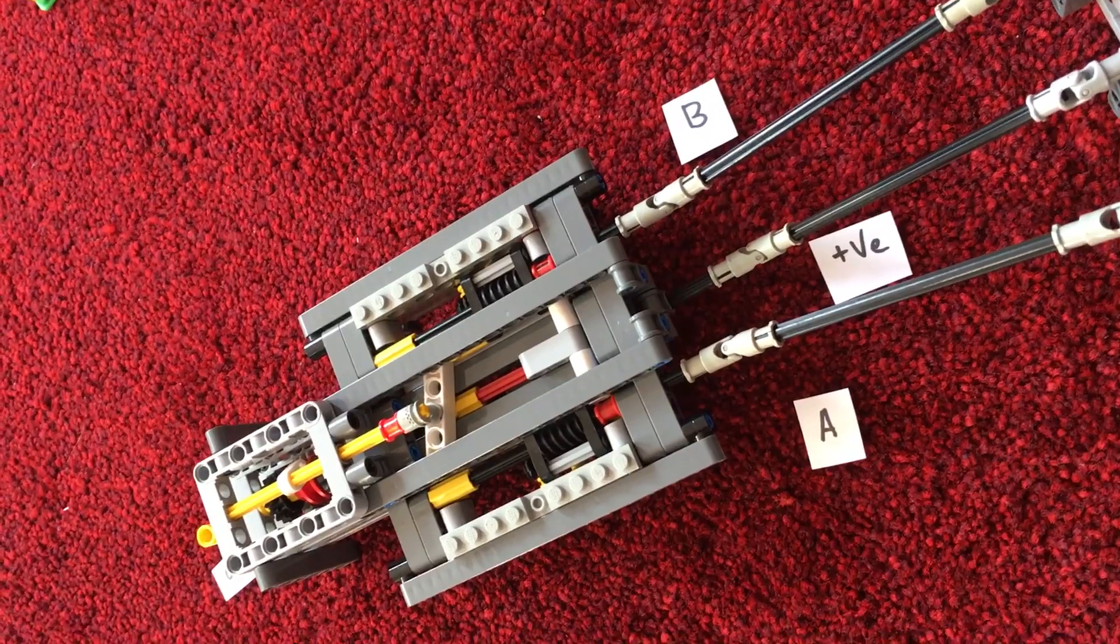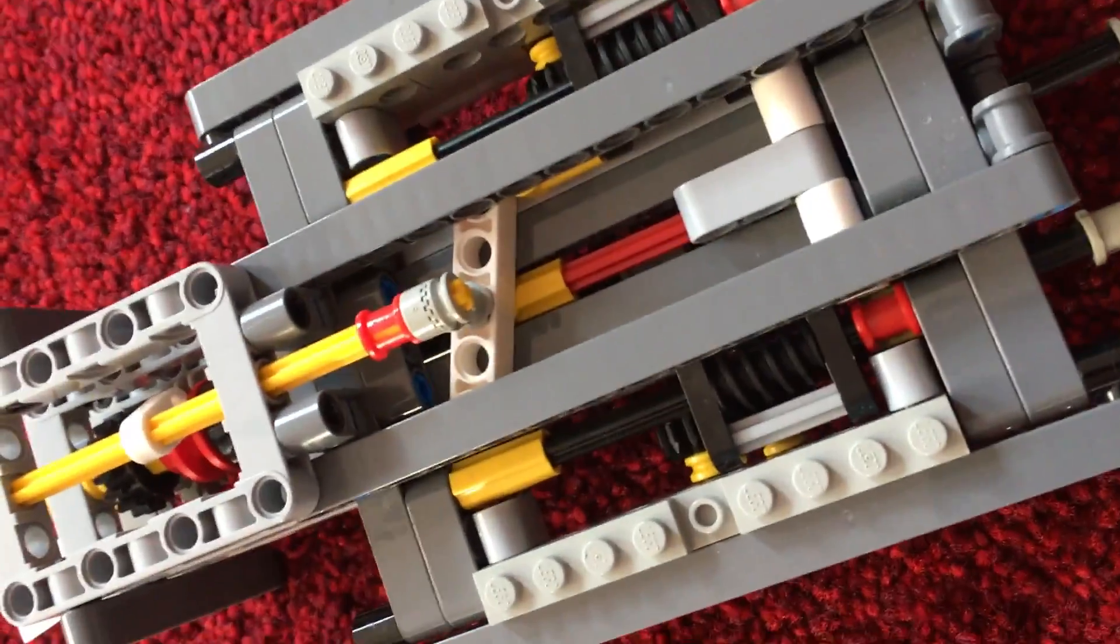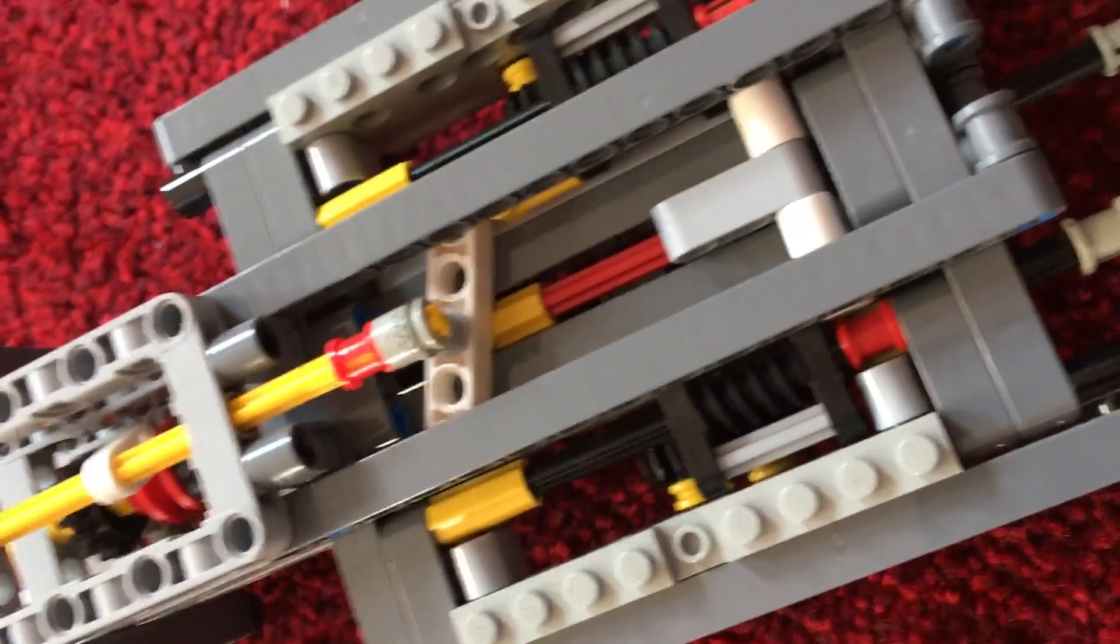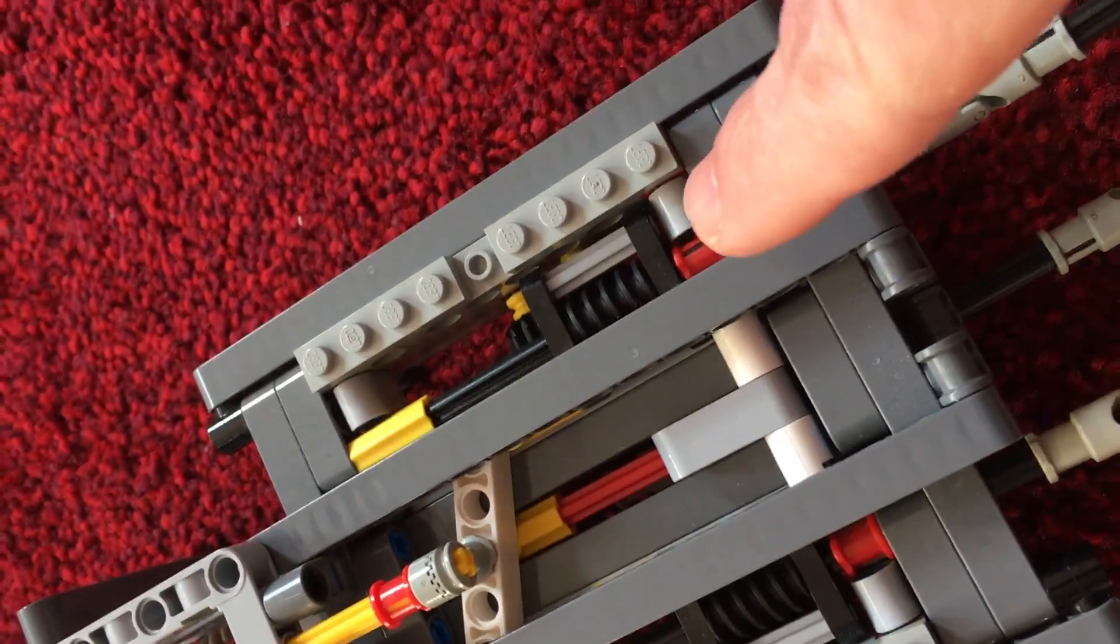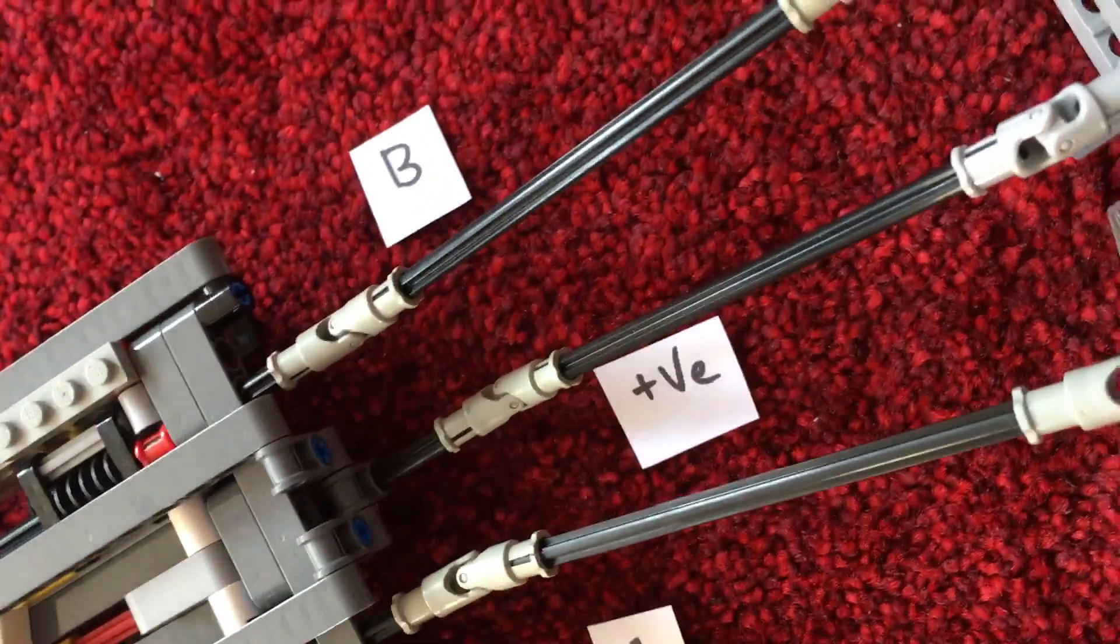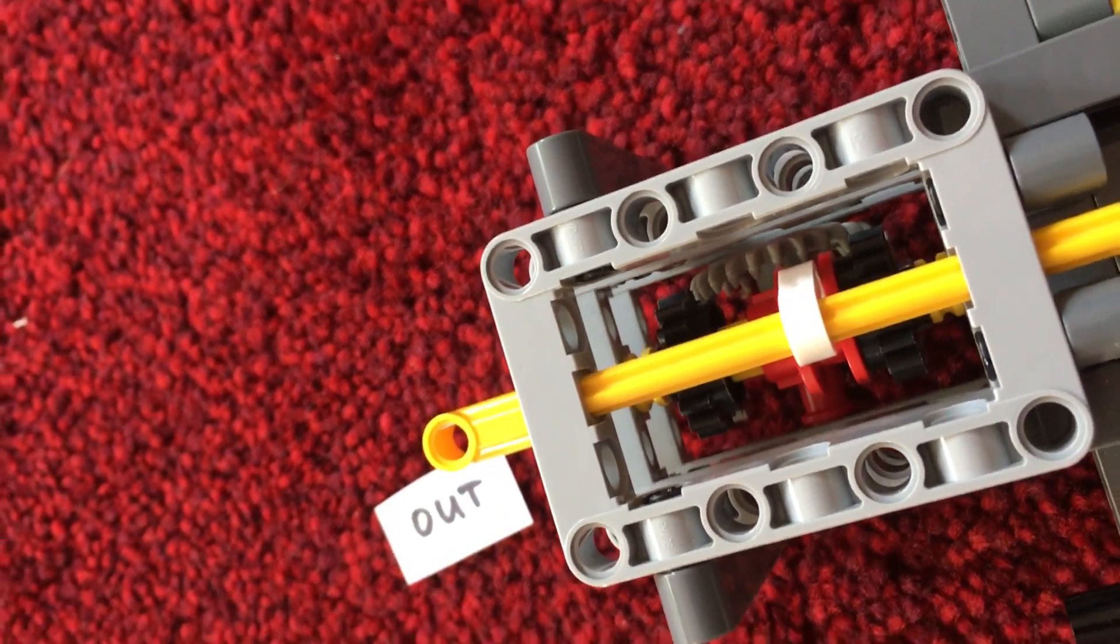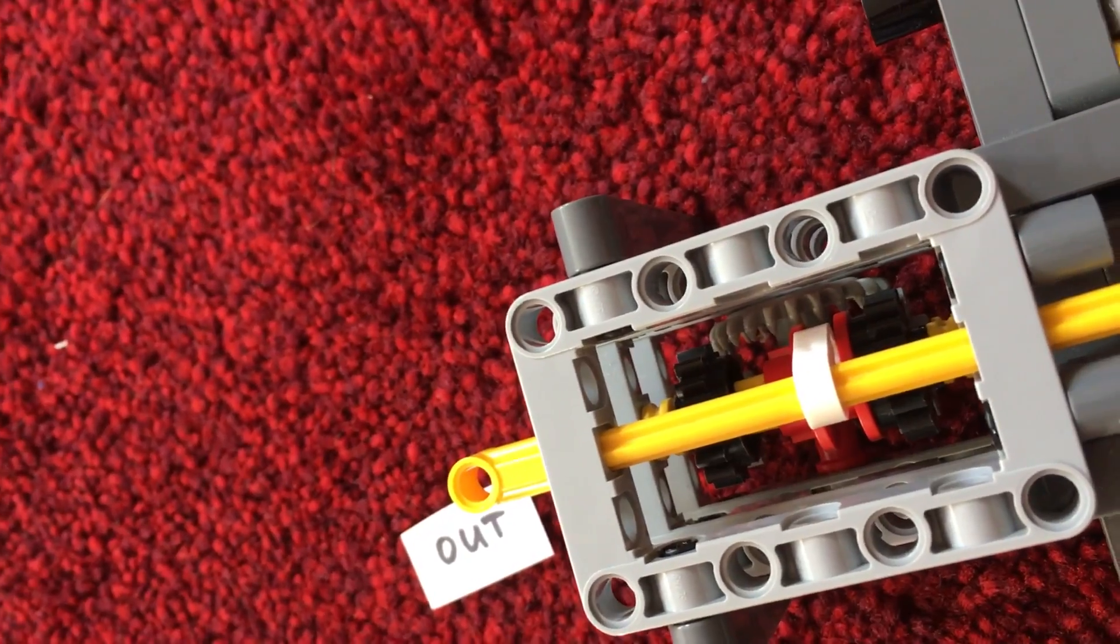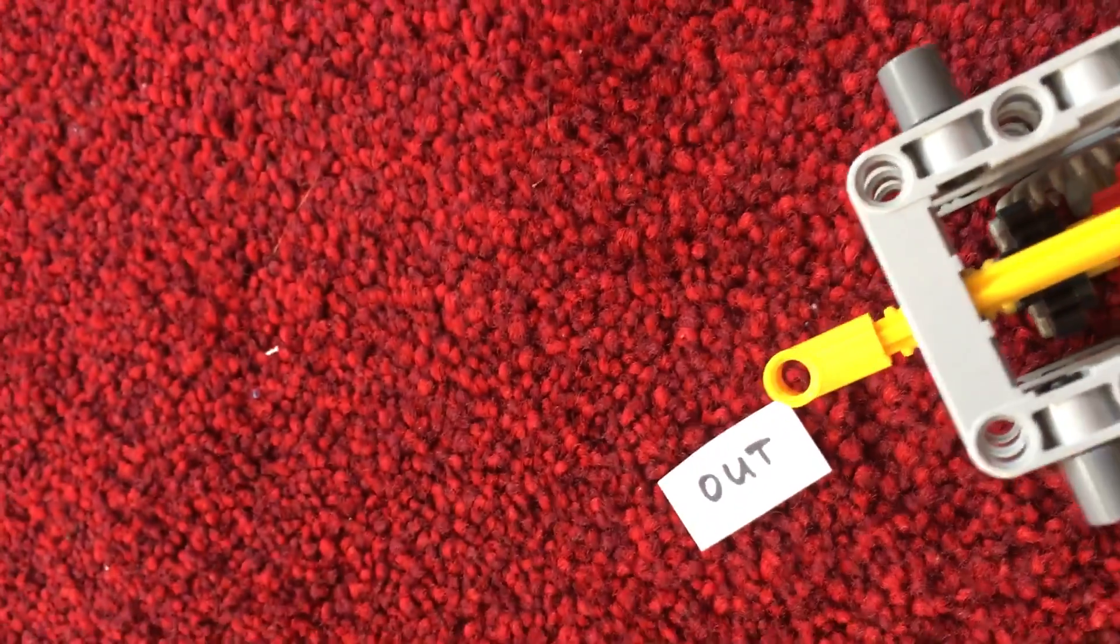So here we are. This is a powered AND gate consisting of actually two linear actuators, one here and one there. In the center there's a positive voltage line that goes all the way through underneath to the end, where there's one of those gear switches from the Technic system to the output.